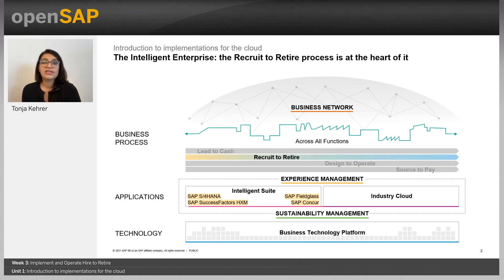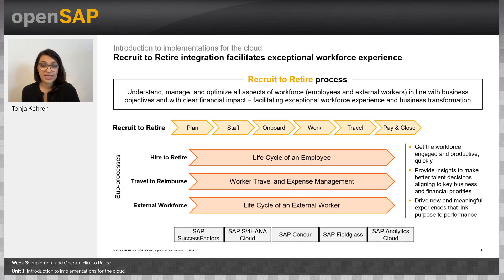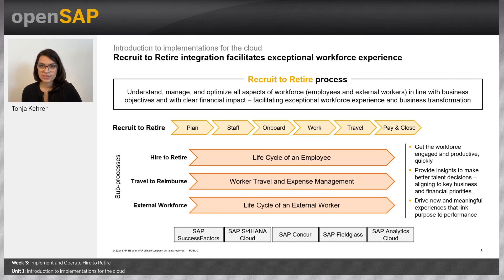Let's take a closer look at the definition and components of Recruit to Retire. It starts with the question: how does an organization manage its workforce? It helps you understand, manage, and optimize all aspects of the workforce for employees as well as external workers — getting the right number of people in the right place at the right time doing the right tasks. Three sub-processes exist: Travel to Reimburse, External Workforce, and Hire to Retire.